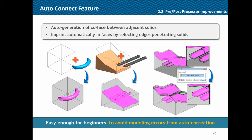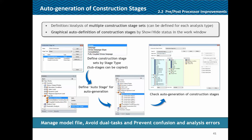The auto-connect feature: when generating or placing multiple solids, auto-connect can automatically generate co-faces between them ensuring connectivity, making it easy for beginners to avoid modeling errors. Definition of multiple construction stages can now be auto-generated — you have different stage types such as stress-based or seepage-based. You select the stage type, go to define auto-stages, and the software automatically generates the construction stages which can then be checked by the user.